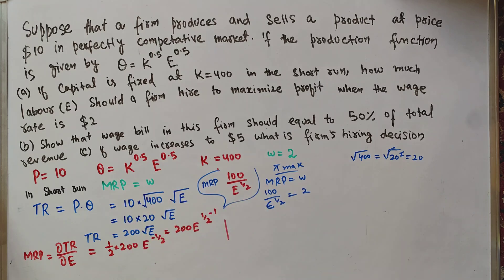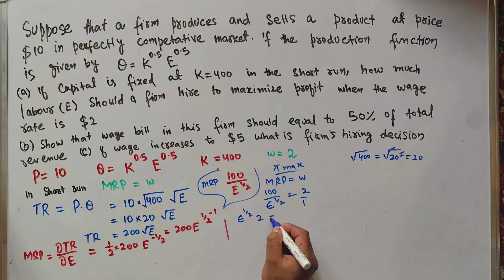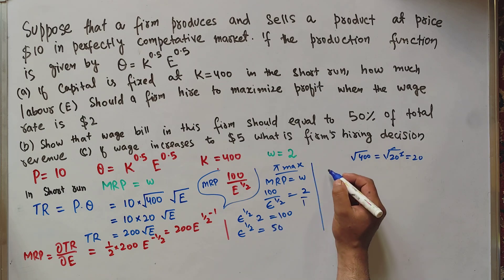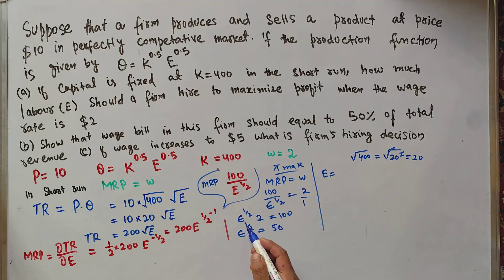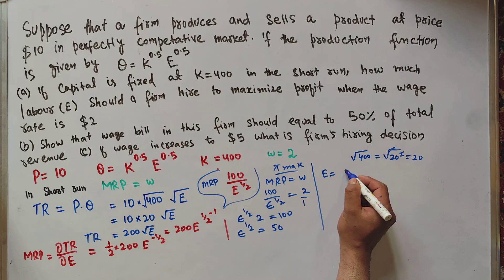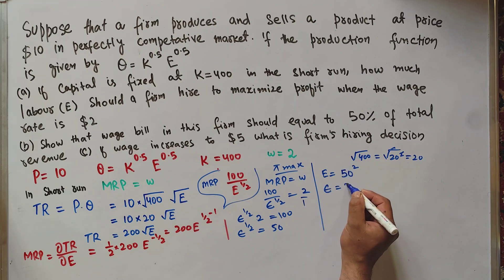Marginal revenue product equals 100 / E^(1/2). For profit maximization, we equate MRP with the wage rate: 100 / E^(1/2) = 2. Cross-multiplying: E^(1/2) × 2 = 100, so E^(1/2) = 50. Squaring both sides, E = 2500. The firm will employ 2500 units of labor.